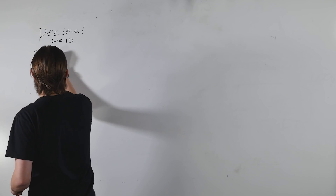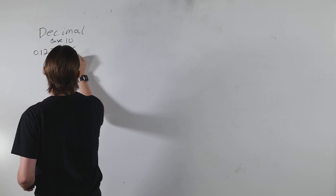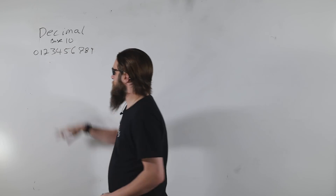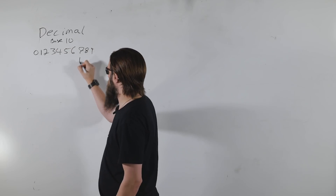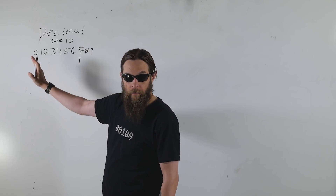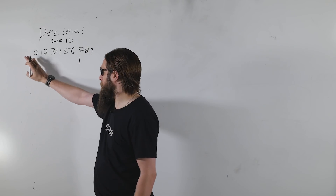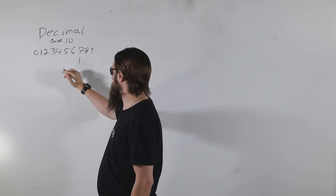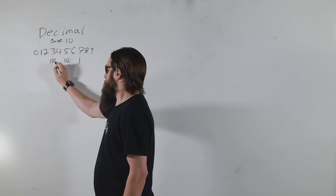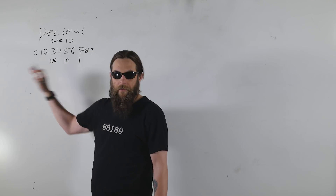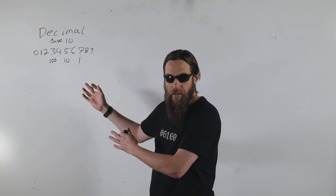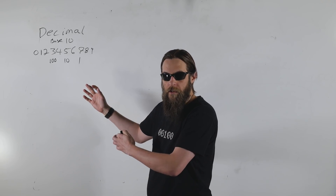One, two, three, four, five, six, seven, eight, nine. You go through this and you get a ones column. When you finish at nine, you carry the one back — you're going to have a tens column, hundreds column, thousands, ten thousands, hundred thousands.